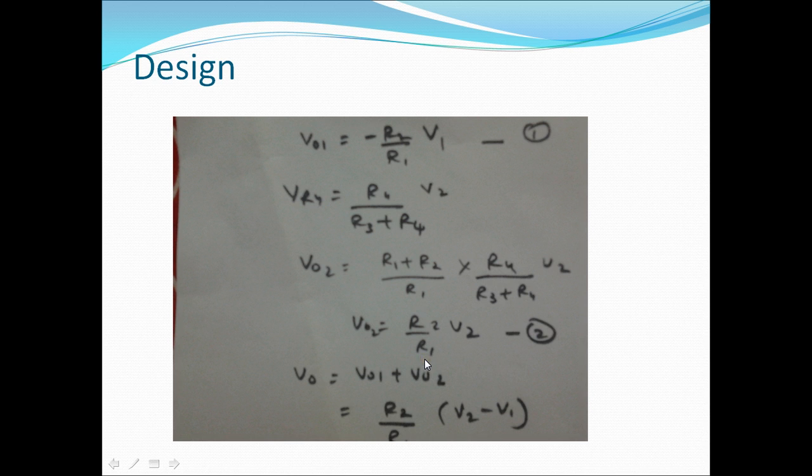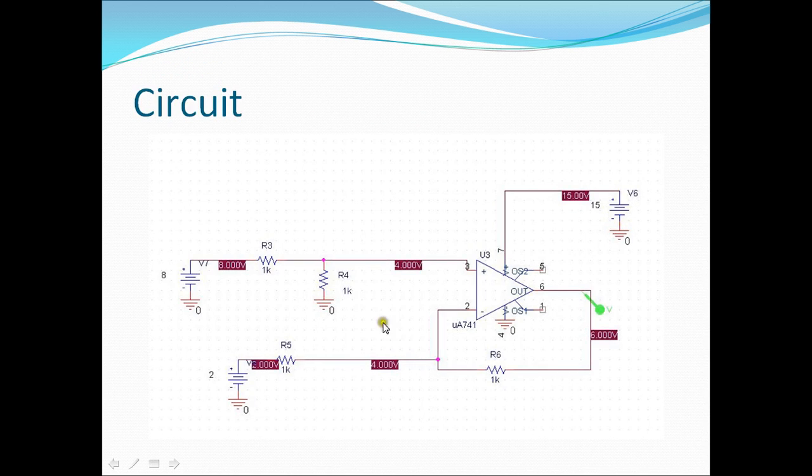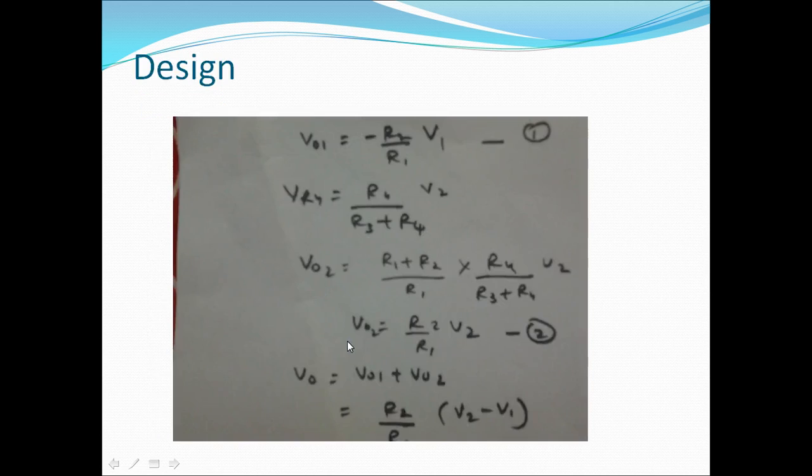So as superposition theorem says, VO is equal to VO1 plus VO2. That is output due to inverting terminal alone with non-inverting terminal grounded, plus voltage due to non-inverting terminal with inverting terminal grounded. So finally we get VO1 plus VO2 is equal to R2 by R1 times V2 minus V1.